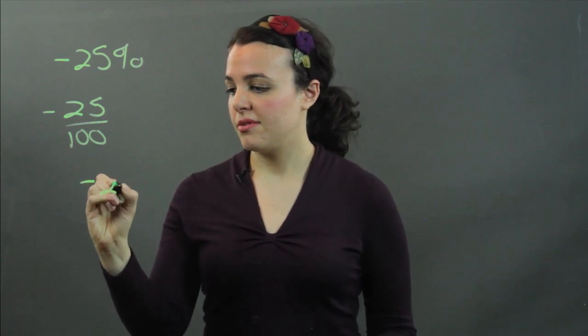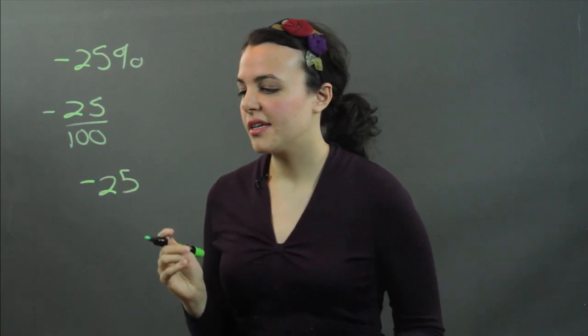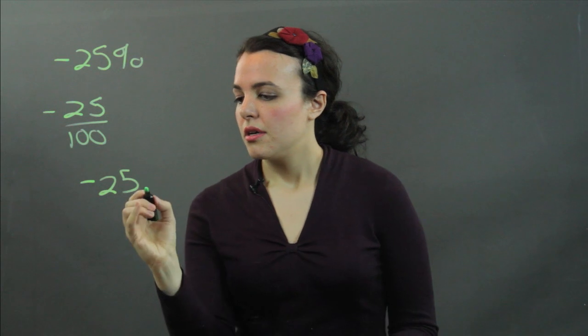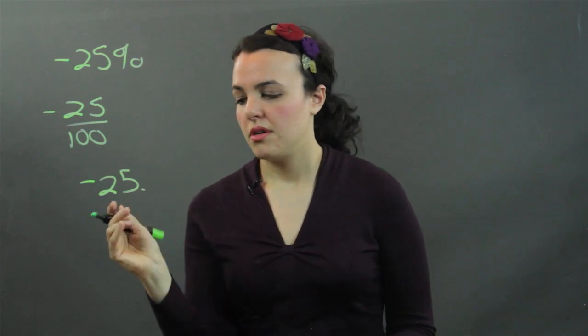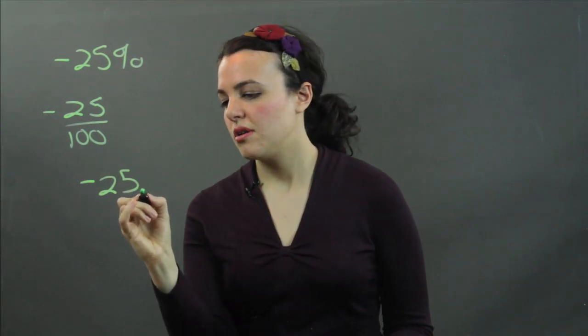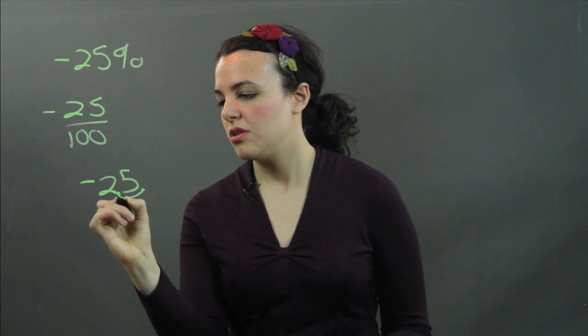For example, negative 25, the one we're doing. You take the decimal point and you move it over to the left two spaces.